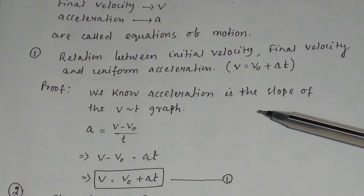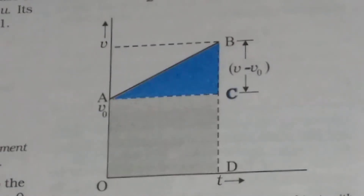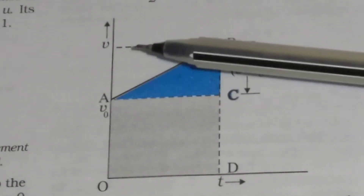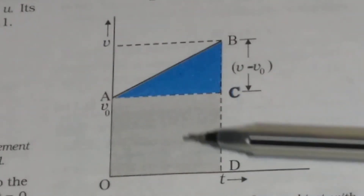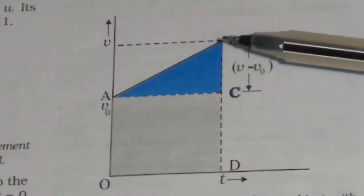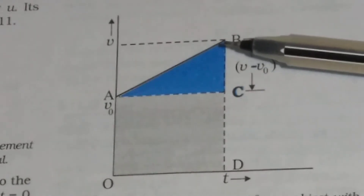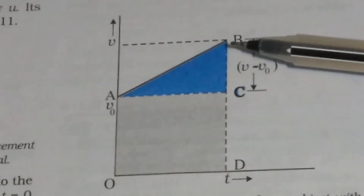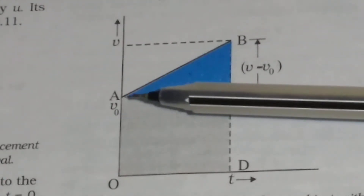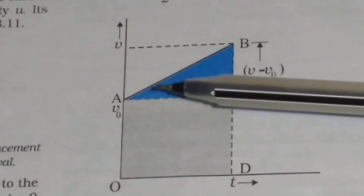We know from the vt graph, the slope of the straight line. In the x-axis we have taken time and in the y-axis we have taken velocity, so it is conventionally called the vt graph. The initial velocity is v0 and the final velocity is v. So this distance is v and this distance is v0, meaning this distance will be equal to v minus v0. This length is equal to t. So the slope of the straight line FB is equal to the acceleration a.